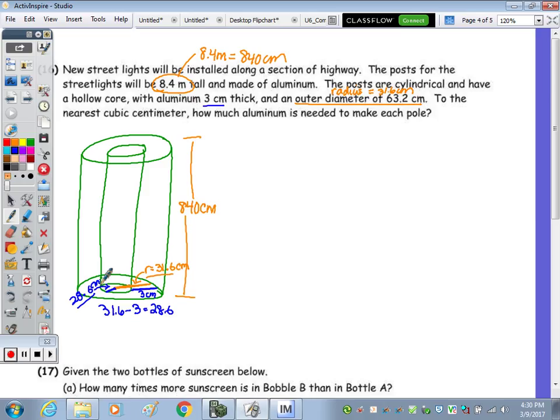How much aluminum is needed to make each pole? How much aluminum is volume. So we find the volume of the larger cylinder and subtract the smaller cylinder. That will give us the volume of the street light. So the volume of the outer minus the volume of the inner is going to be equal to the volume of our street light. Alright, let's do some calculations.